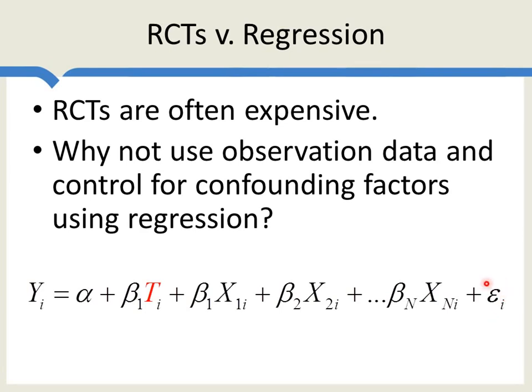However, if you fail to include some important control variables — which end up buried in the error term — and if those omitted variables are correlated with whether the worker has been treated, then your estimate of the effect of treatment on income will be biased. This problem was understood at a theoretical level for a very long time. But more recently, we've managed to compare randomized controlled trials with the results of observational studies, and the differences have been quite shocking.